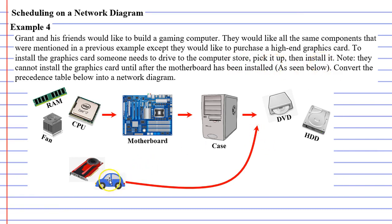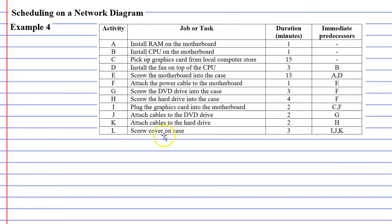They cannot install the graphics card until after the motherboard has been installed — you can see the arrow showing that it can't be installed until that point. We have a precedence table on the next slide that we're going to convert into a network diagram. The table shows the procedure needed to build the computer, and includes a duration column in minutes showing how long each activity takes. For example, installing the RAM on the motherboard only takes one minute.